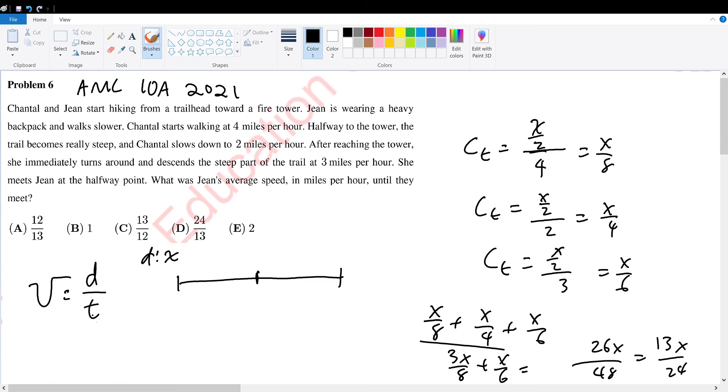Now, since the velocity is equal to the distance of Jean divided by the time of Jean, well, how much time did it take Jean to travel from here to here? Well, the time that she took was the time that it took Chandler to walk from here to here, from here to here, and then all the way from the endpoint to the midpoint. So therefore, we calculated the amount of time that it took Jean to walk the halfway point.